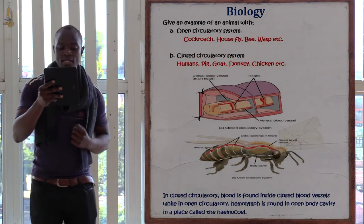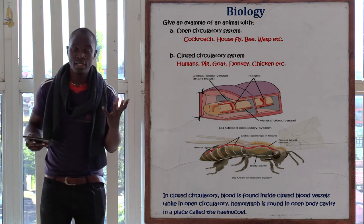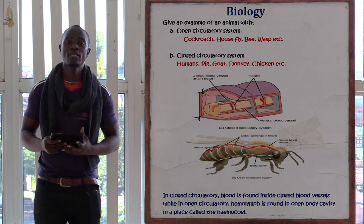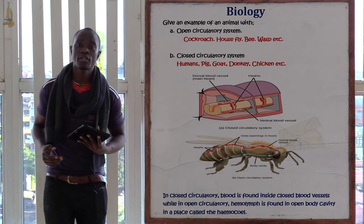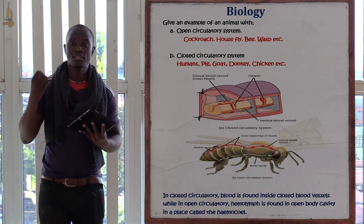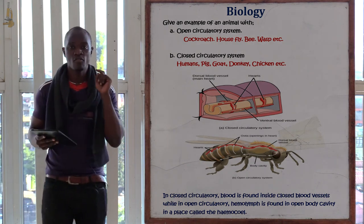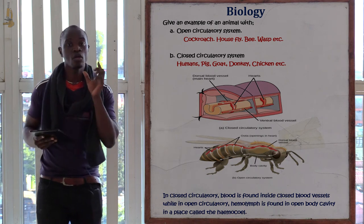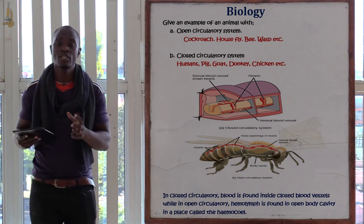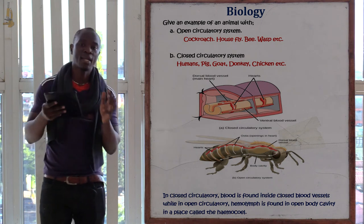Examples of animals with an open circulatory system include cockroach, housefly, bee, and wasp. Animals with a closed circulatory system include mammals, reptiles, birds, and amphibians. In the closed system, a muscular heart pumps blood through closed blood vessels.